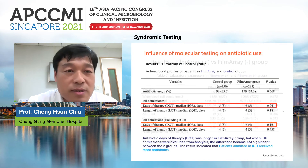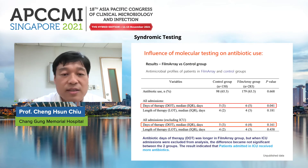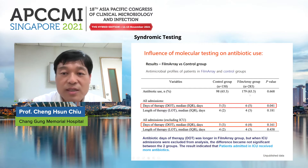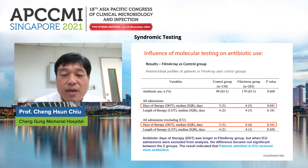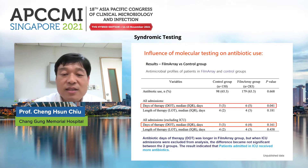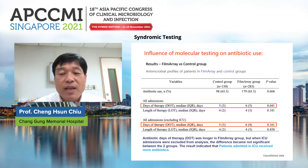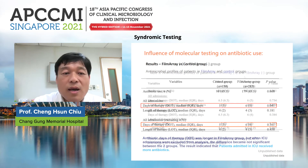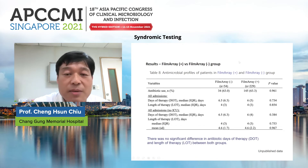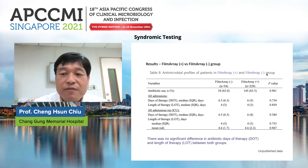Looking at the influence of molecular testing on antibiotic use, antibiotic days of therapy was longer in the FilmArray group compared to controls, but when ICU admissions were excluded from the analysis, the difference disappeared — indicating that ICU patients in the FilmArray group drove the higher antibiotic use. When comparing FilmArray-negative and FilmArray-positive groups directly, there was no difference in antibiotic use between the two groups.